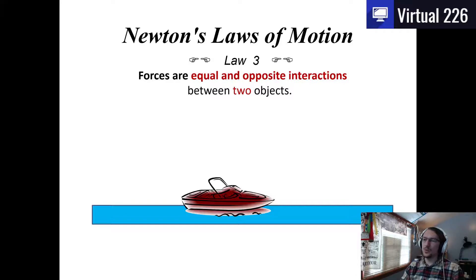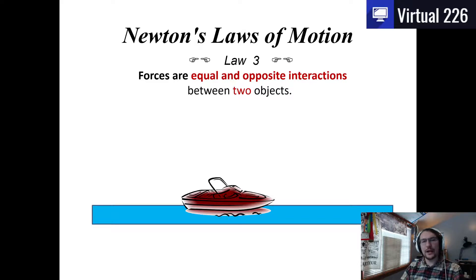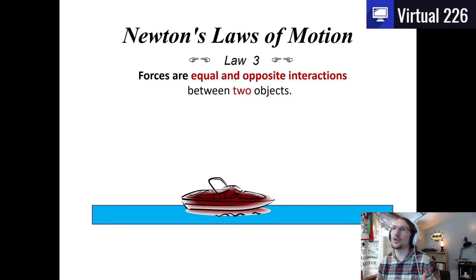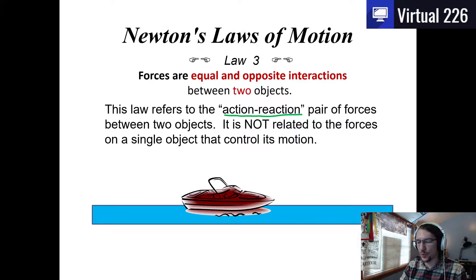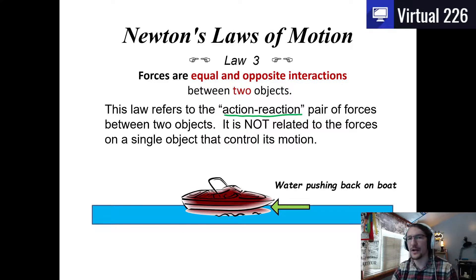Newton's Third Law states that forces are equal and opposite interactions between two objects. When we talked about fundamental forces, they always involved two objects — gravity needs two masses to attract one another. We call these action-reaction pairs. These pairs are tied to the forces themselves, not to the objects' motion. For example, the water pushes back on the boat, which means the boat must be doing something to the water.